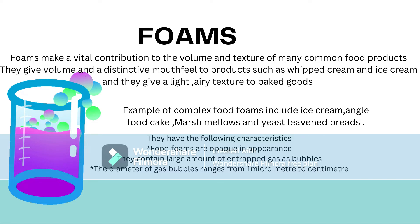Foams make a vital contribution to the volume and texture of many common food products. They give volume and distinctive mouthfeel to products such as whipped cream and ice cream, and they give a light, airy texture to baked goods. A foam contains gas bubbles dispersed in a liquid continuous phase. The liquid phase may be a simple dispersion, such as egg white which is a dilute protein dispersion, or it may be complex, containing emulsified fat droplets, ice crystals, or solid material. Examples of complex food foams include ice cream, angel food cake, and marshmallow. Foams such as meringue and baked goods are heat-sensitive, which denatures the protein and converts the liquid phase to a solid phase, giving permanence to the foam structure.